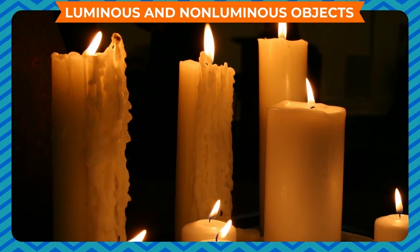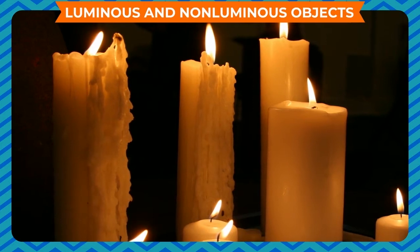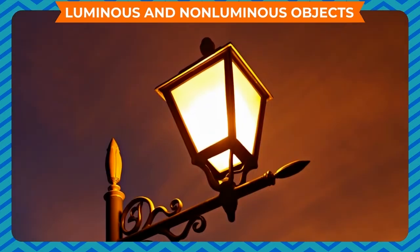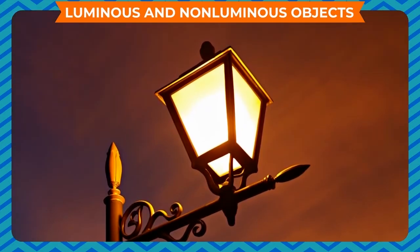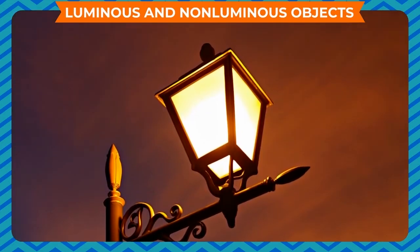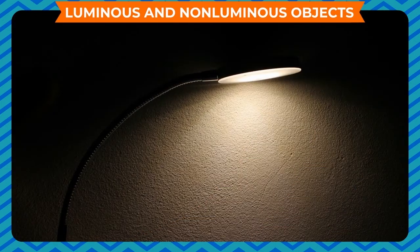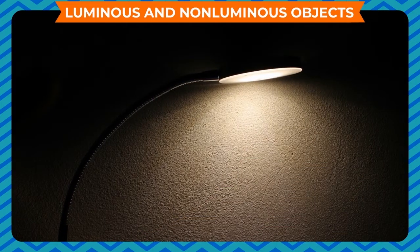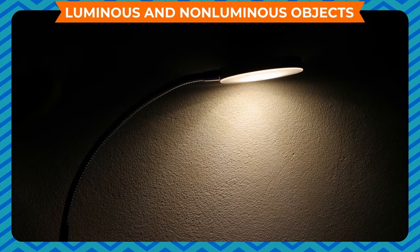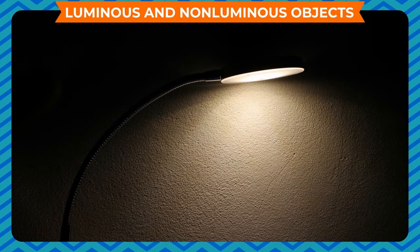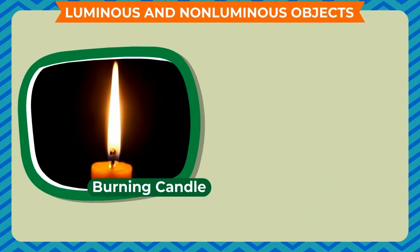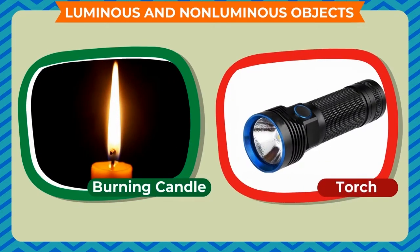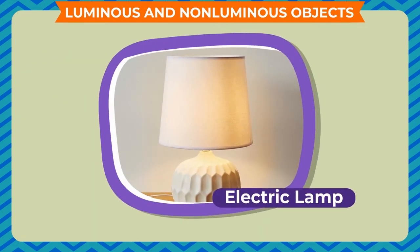Luminous and non-luminous objects. Those objects which have their own source of energy to emit light are called luminous bodies. Examples are the sun, stars, burning candle, torch, electric lamp, etc.